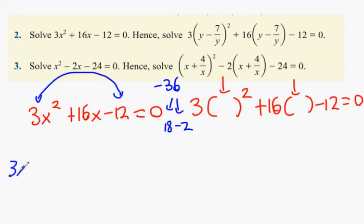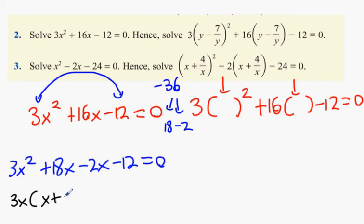We then change it into 3x squared plus 18x minus 2x minus 12 equals 0. What can we factorize out of these two? 3x into 3x plus 6 and then the other one, x plus 6 equals 0.